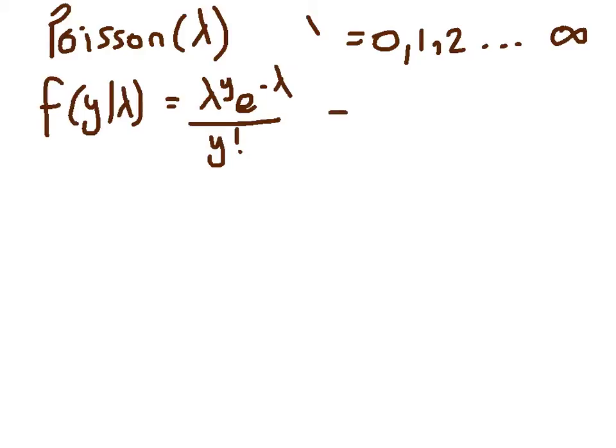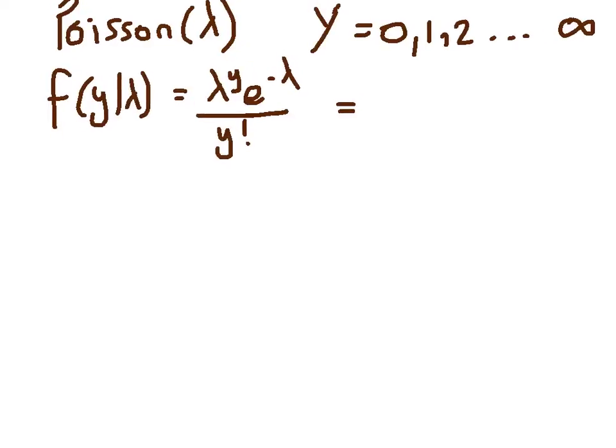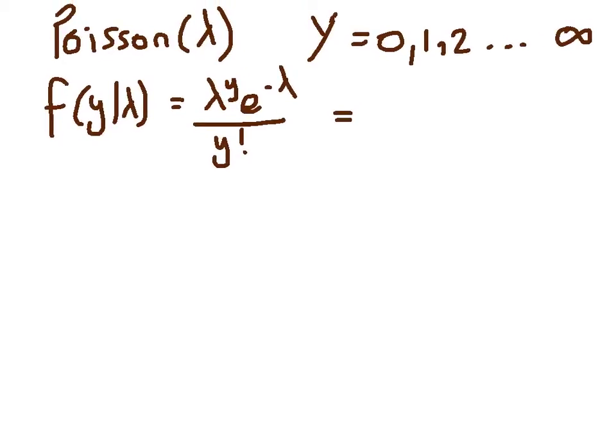Now, what we need to do is rewrite that in a suitable format. We'll start by taking everything to be e to the power something. To make y factorial e to the power something, I need to take e to the log y factorial, e to the minus lambda is already e to the something. Of course, lambda to the y, I need to take e to the y log lambda.